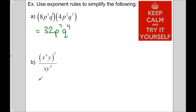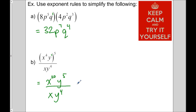For part b, the numerator is raised to a power of 5, so each exponent inside multiplies by 5: x gets a new exponent of 20, and y gets 1 × 5 = 5. The denominator still has xy⁴. Now applying exponent rules: for x, 20 minus 1 (the invisible exponent) gives x to the 19. For y, 5 minus 4 = 1, so we just write y.